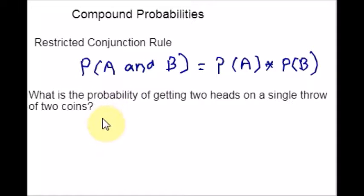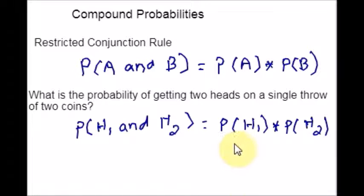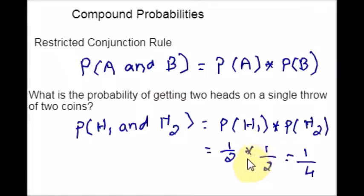So we are supposed to find the probability of H1 and H2. Getting a head on the first throw is H1, which is one out of two. The second coin is also one out of two. Just multiply them. The probability of the outcome of tossing a coin is one out of two — you may either get a head or a tail.